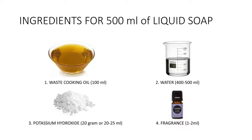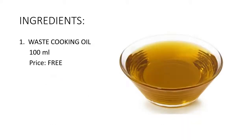First, I will show you the materials or chemicals that we need to produce about half a liter of liquid soap. One: waste cooking oil. We need 100 ml of waste cooking oil. Try to filter and remove any solids from your waste cooking oil using a strainer that you have in your kitchen. If you do not have one, you can buy from a DIY store that will probably cost about 2 ringgit.